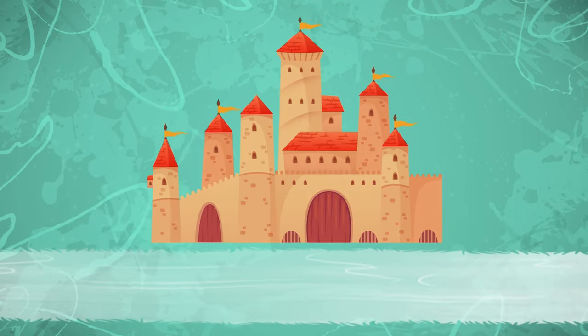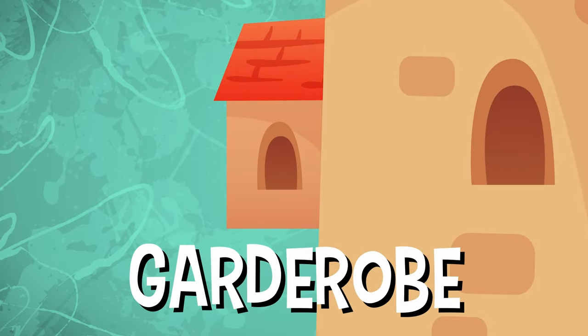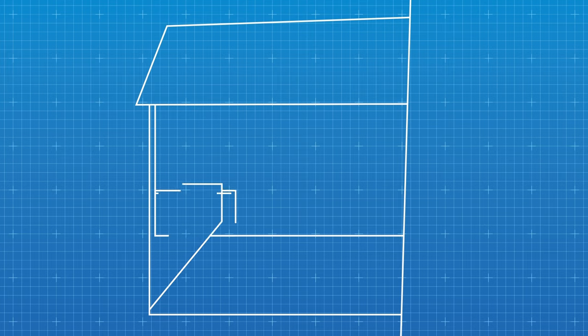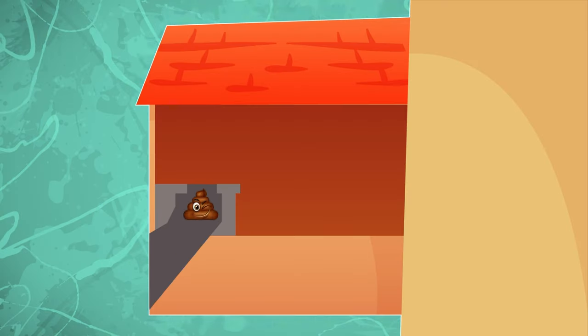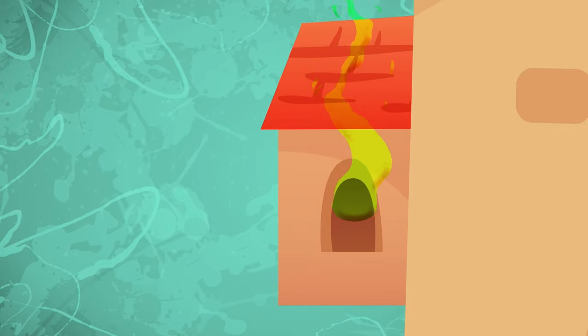Once castles came around, people used something called a garderobe, which was basically a small closet jutting out the side of a castle wall. It had a bench with a hole so that waste could drop down out of the castle onto the ground or into a moat. These garderobes were very stinky and not very clean.